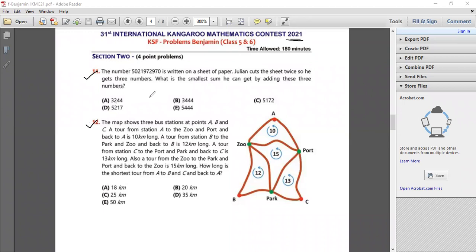Let's do question number 11. The number 5021972970 is written on a sheet of paper. Julian cuts the sheet twice so he gets three numbers. What is the smallest sum we can get by adding these three numbers?